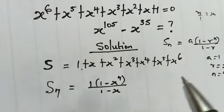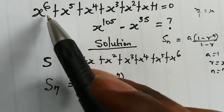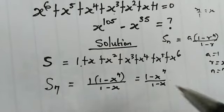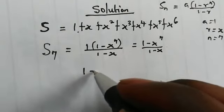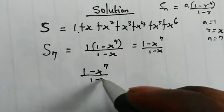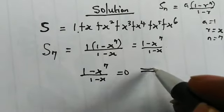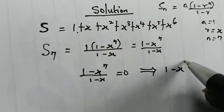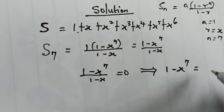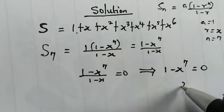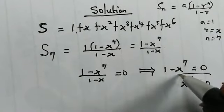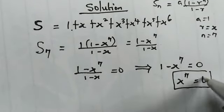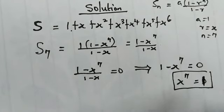This equation is equal to 0, so we have (1 minus x to the power of 7), all over (1 minus x), equal to 0. Multiplying both sides by (1 minus x), we get 1 minus x to the power of 7 equal to 0. From here we get x to the power of 7 equal to 1. I'm sorry — so from here x to the power of 7 is equal to 1.